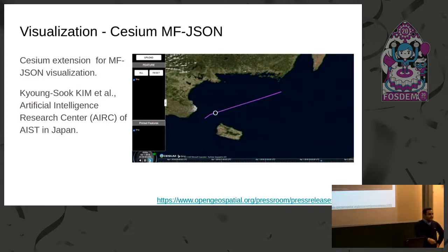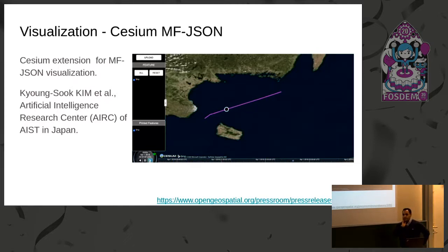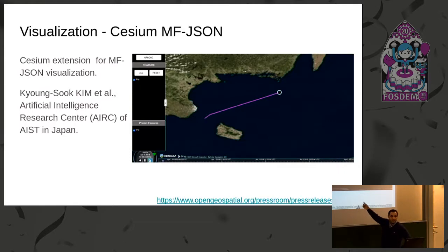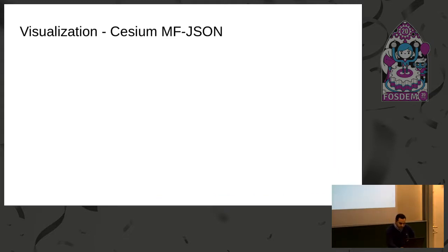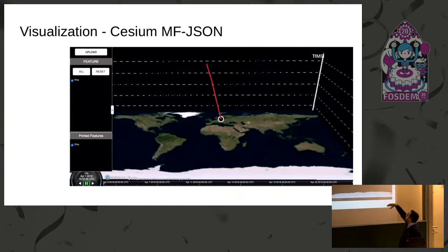Actually, visualizing MFJSON — MFJSON is a new-to-appear OGC standard. OGC now is doing pretty cool stuff, including standards for moving features. This data was exported from MobilityDB as MFJSON, imported into a Cesium extension, and then visualized as a moving ship — this is one of the ships in the AIS example. They even did some 3D so you can see a space-time cube — that's a spatiotemporal movement of the same ship.